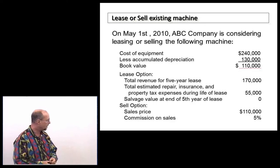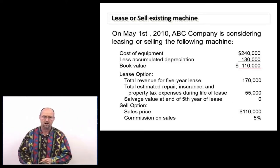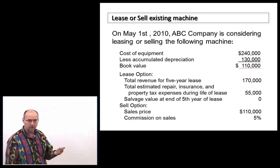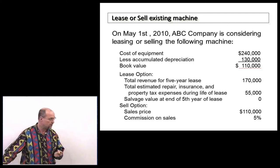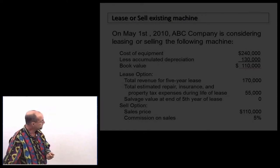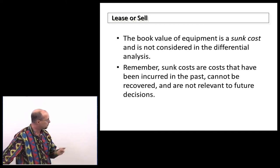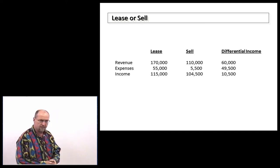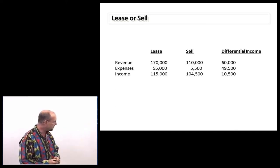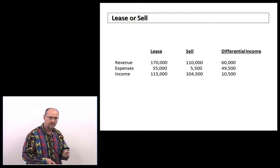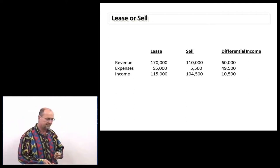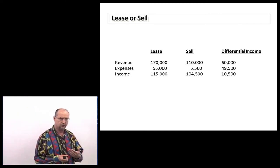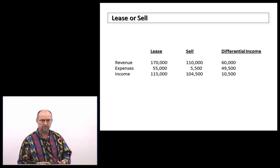Alternatively, I can sell it for $110,000 and incur a 5% commission on the sale. These are simple numbers, and you can probably quickly determine the course of action. The differential revenue is $60,000 — the difference in revenue between the two choices. Differential expense is $49,500, and differential income is $10,500. It makes more sense to lease the equipment than to sell it. In real life, these decisions will be more complicated, but we always start simple to illustrate the concept.